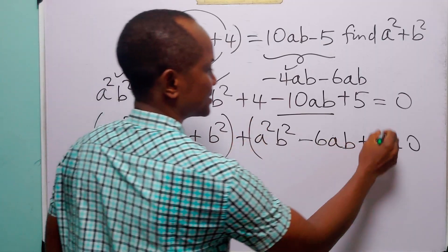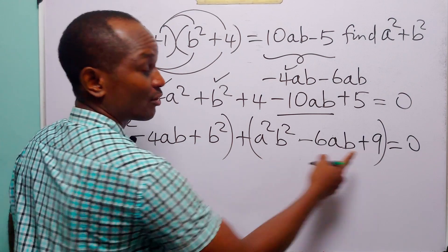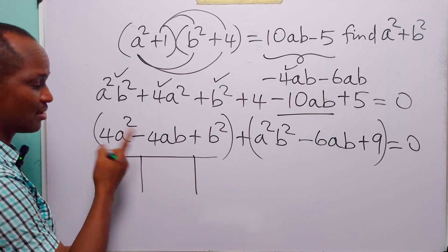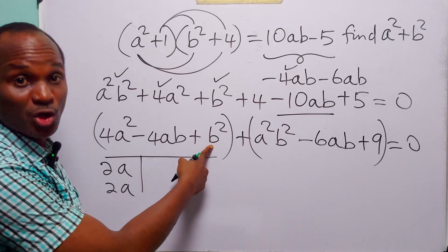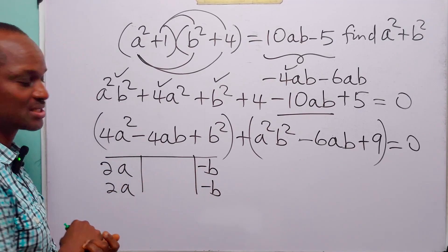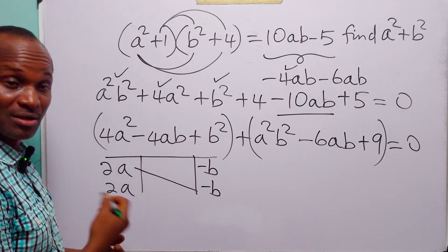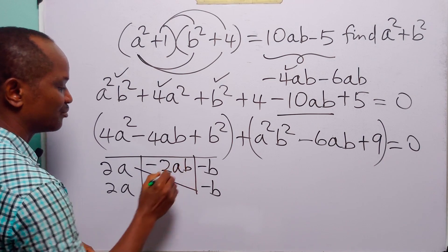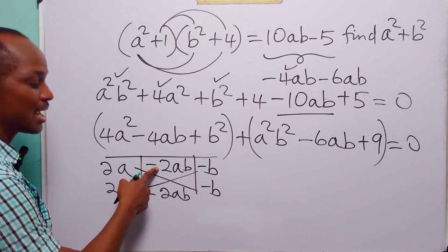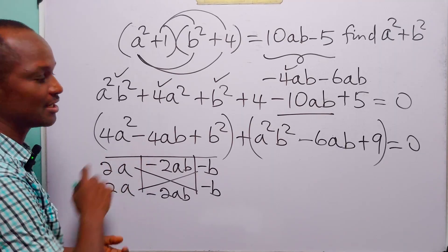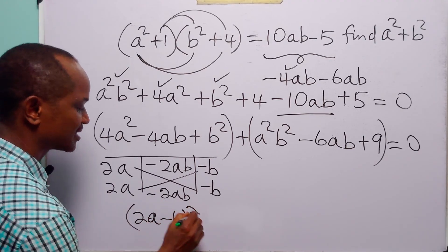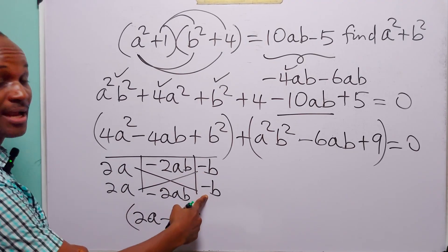We now group this into two sets and factorize each. Using the table method for the first group: the factors of 4a squared are 2a and 2a, and the factors of b squared are b and b. Since the middle term is negative, we use minus b and minus b. Multiplying 2a by minus b gives minus 2ab, and doing the same gives another minus 2ab — so minus 2ab minus 2ab gives minus 4ab. This factorizes as (2a minus b) squared.